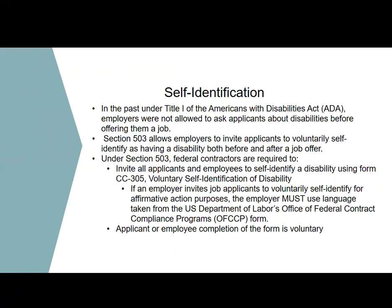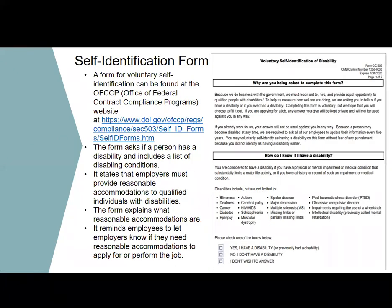If an employer invites a job applicant to voluntarily self-identify for affirmative action purposes, they must use language taken from the U.S. Department of Labor's Office of Federal Contract Compliance Programs. Completion of the form is voluntary. On this slide, you will see on your right-hand side an actual copy of the form, and the first bullet provides the website where you can find it. The form asks if a person has a disability and includes a list of disabling conditions. It states that employers must provide reasonable accommodations to qualified individuals with disabilities, explains what reasonable accommodations are, and reminds employees to inform employers if they need accommodations to apply for or perform a job.